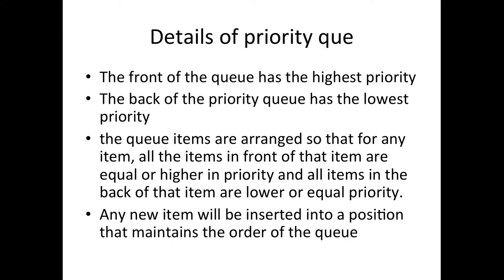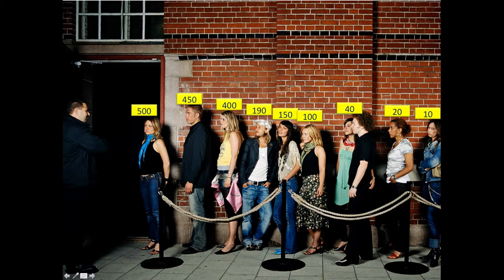Let's formally declare that. These are the details of a priority queue — we'll refer to it simply as the queue throughout this section. The front of the queue has the highest priority; the back has the lowest. Items are arranged so that for any item, all items in front of it are equal to or higher in priority, and all items behind it are lower or equal in priority. We can pick out any item, like this woman at $150, and see that everyone behind her has a smaller or equal value, and everyone in front has a bigger or equal value.